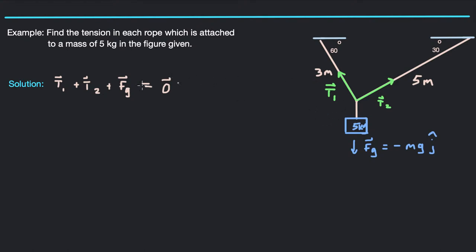So if this thing were vertical, all of the tension would be in this rope and this rope would be useless — it wouldn't be doing anything to hold up the mass. If T1 is larger, we expect its magnitude to be larger when we get done. So tension 1 plus tension 2 plus force due to gravity should be equal to the zero vector. What we need first is tension 1 and tension 2. We can notice that this angle is also going to be 30 degrees and this angle is going to be 60 degrees.